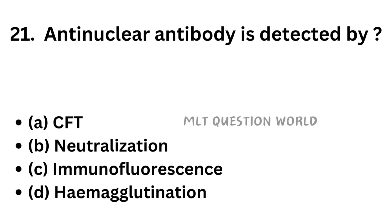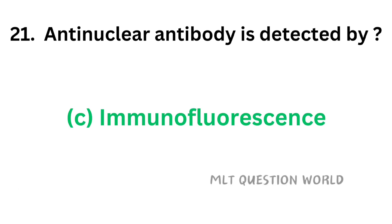Question number 21. Anti-nuclear antibody or ANA is detected by: Option A, CFT; Option B, neutralization; Option C, immunofluorescence; Option D, hemagglutination. The correct answer is Option C, immunofluorescence. Anti-nuclear antibody is detected by immunofluorescence.